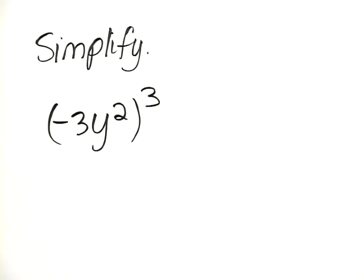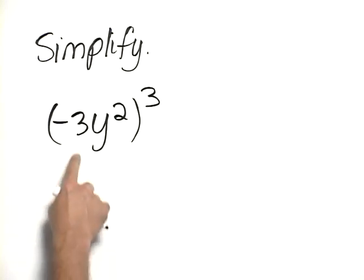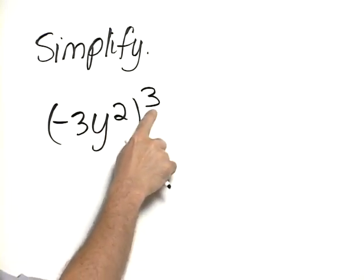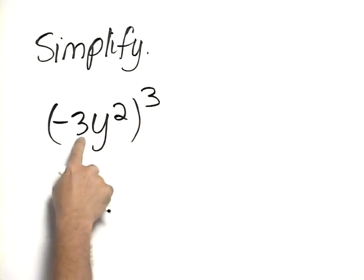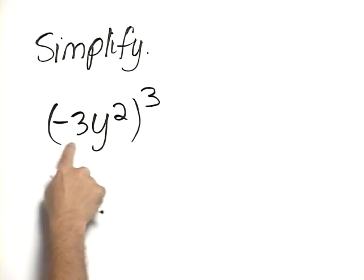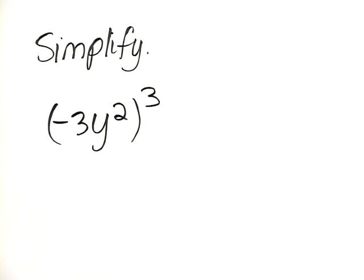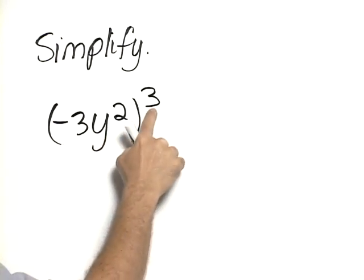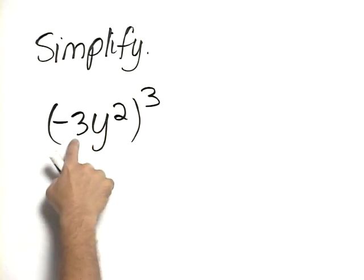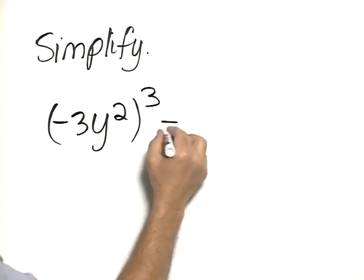Simplify the quantity negative 3y squared, all cubed. When we're raising an expression to a power and that expression is all multiplication, then what we do is we apply that power to each individual factor.